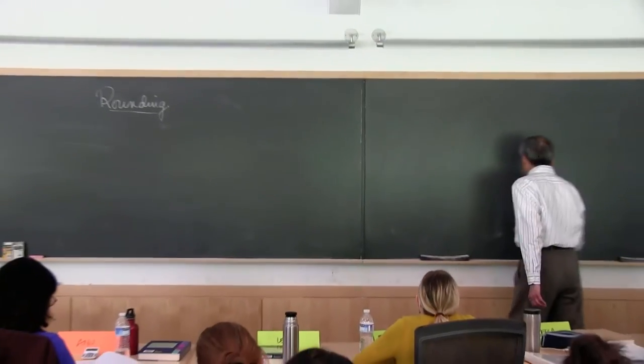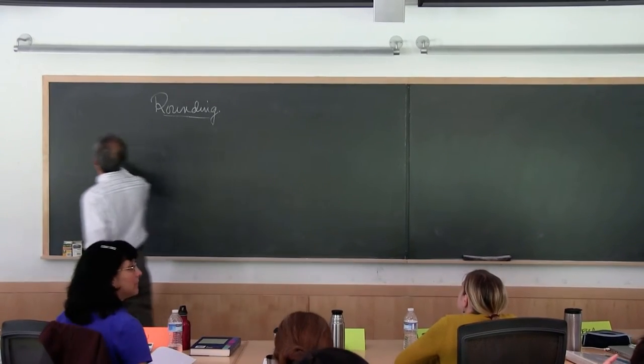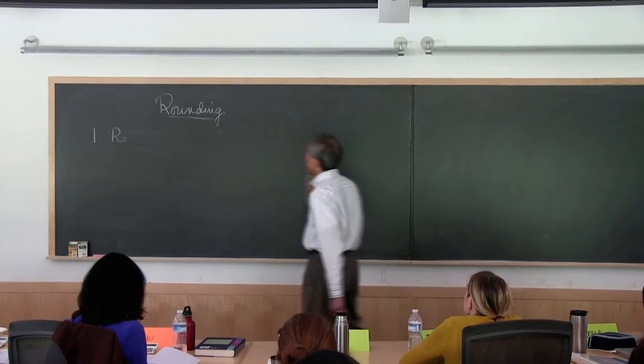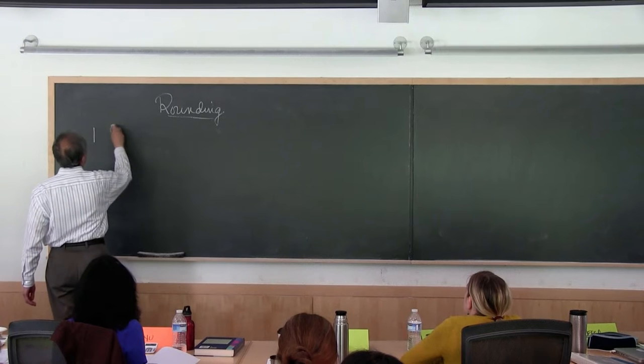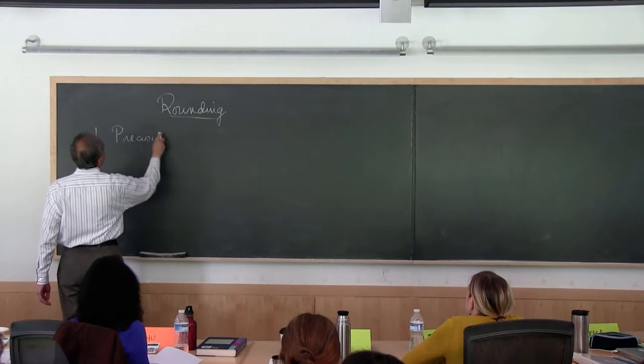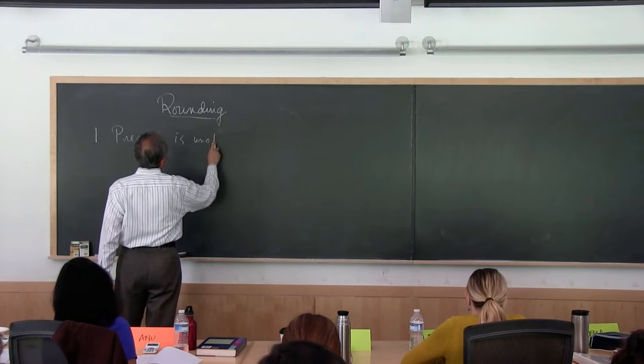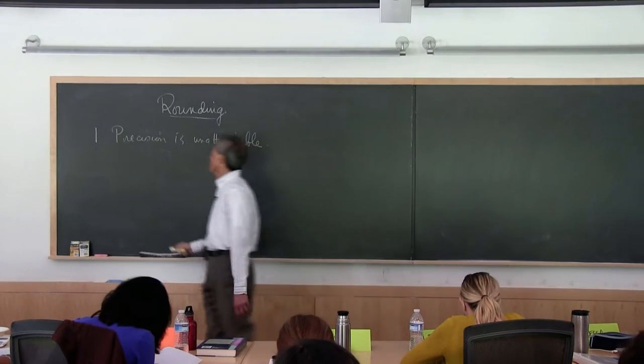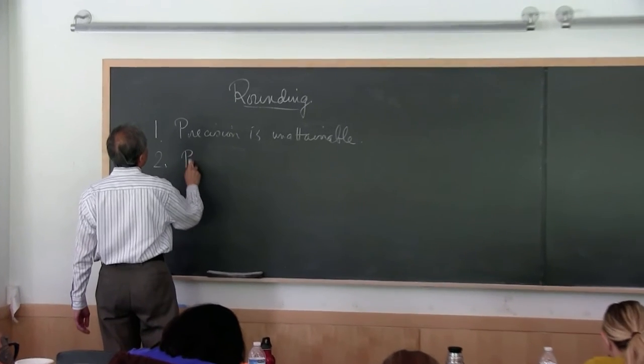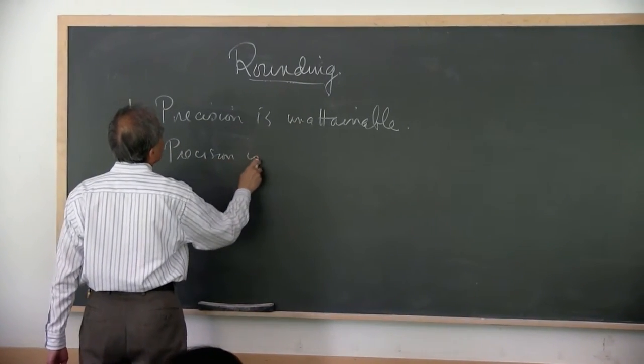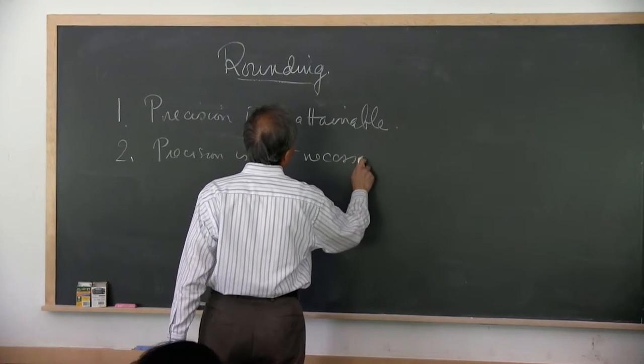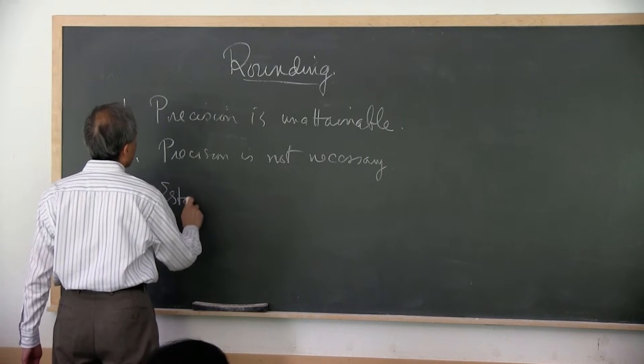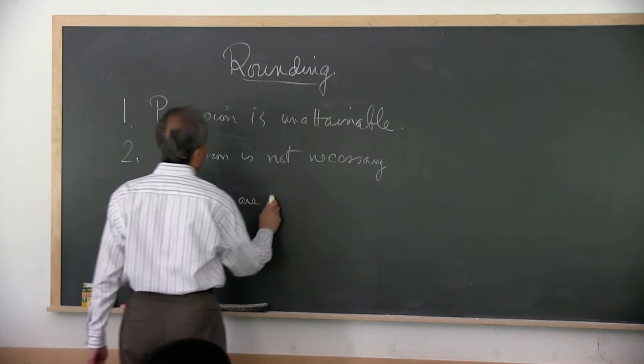There are at least three basic reasons for rounding. There may be more which I just don't happen to know. One: precision is unattainable. The second reason is that precision is not necessary.